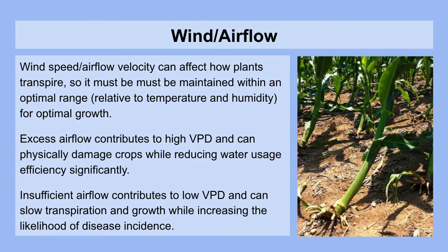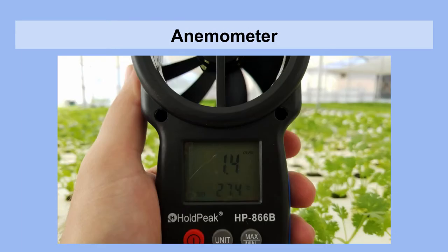Next, we'll take a look at wind and airflow, which is another important environmental parameter. Wind speed can affect how plants transpire, so it must be maintained within an optimal range for optimal growth. Excess airflow contributes to high vapor pressure deficits and can physically damage crops while reducing water usage efficiency significantly. Insufficient airflow, on the other hand, contributes to low vapor pressure deficits and can slow transpiration and growth while increasing the likelihood of disease incidence. To measure airspeed, you need an anemometer.